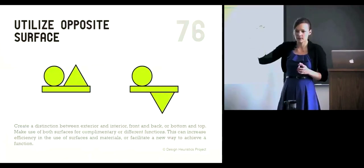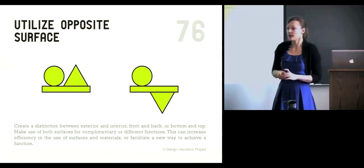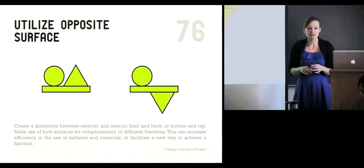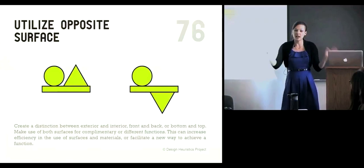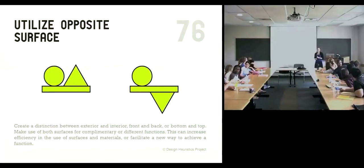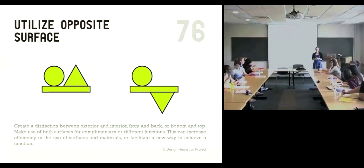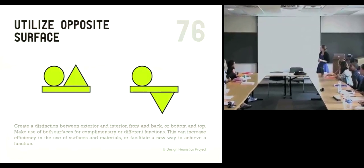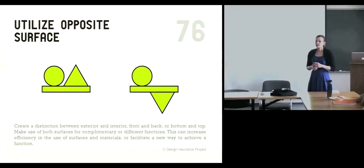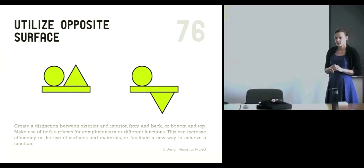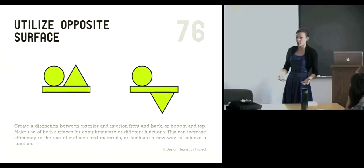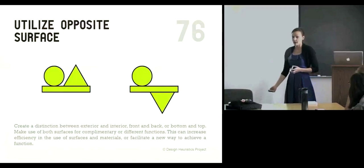Take a couple of minutes, you can talk to people around you. Think about a regular seating device — some kind of chair — and how you can utilize an opposite surface to make it something new, different, or better. Then we'll talk about it as a group. So let's talk about ideas you came up with. Your first idea was to take the chair apart and use the surface for something totally different, and the other was to add a towel rack to the bottom of the chair.